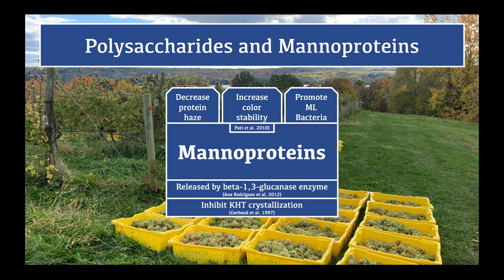An issue to note is that there is such an obsession with manoproteins that far fewer studies have been conducted on other polysaccharide-related compounds produced by yeast autolysis. A 2010 study showed that concentrations of many polysaccharide glycosyl residues, except for galacturonic acid, increased by a statistically significant amount when Chardonnay was aged on lees. The authors concluded that enzymatic breakdown of the original polysaccharides combined with the presence of manoproteins increased the solubilization of many polysaccharides, even those from the grapes. This theoretically should improve the body of the wine, although a sensory panel was not done in this study.